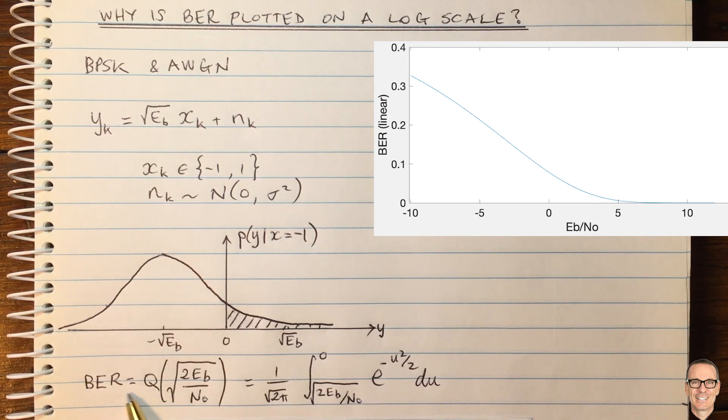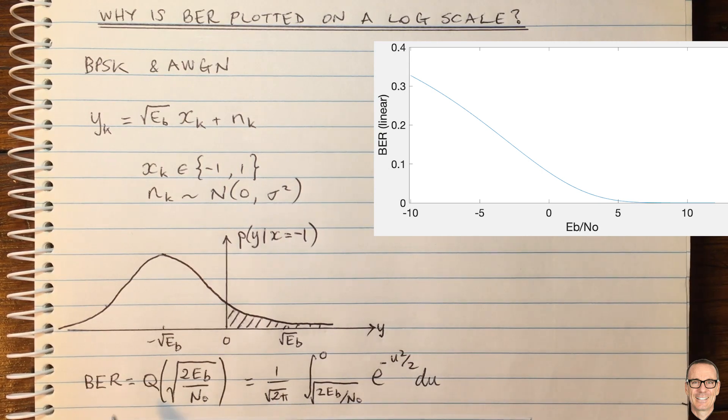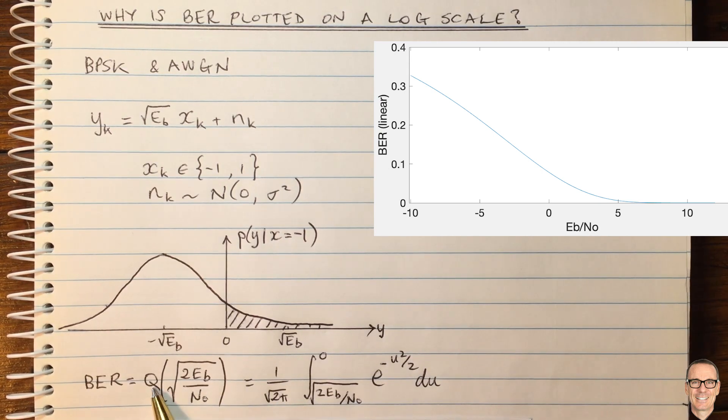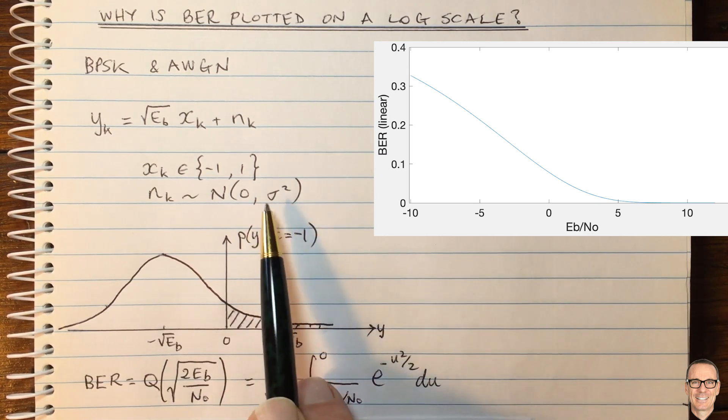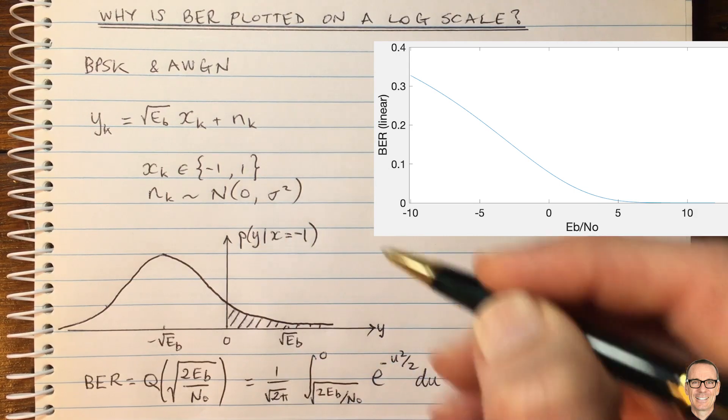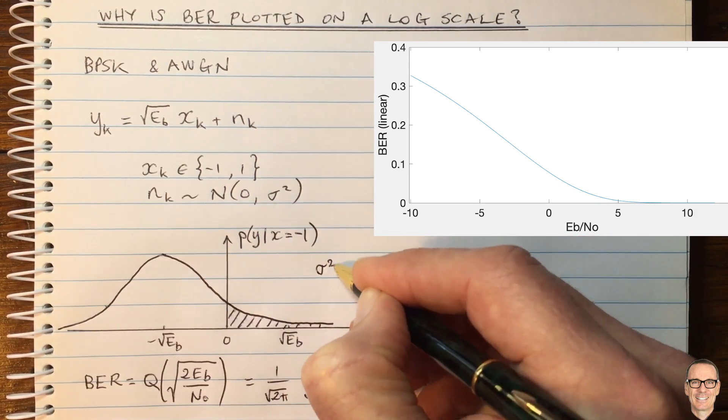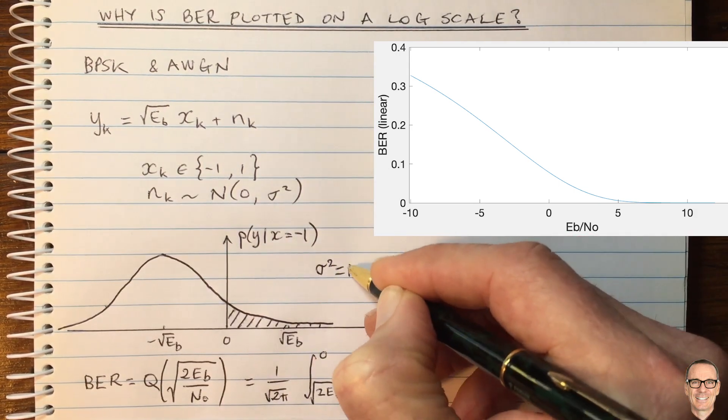And here we have the equation that's being plotted here. We can show the bit error rate is this Q function in terms of the energy per bit to the noise energy ratio. And N0 relates to the sigma squared here because sigma squared equals N0 over 2.